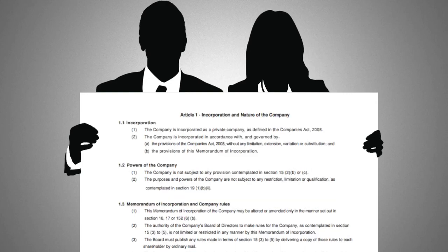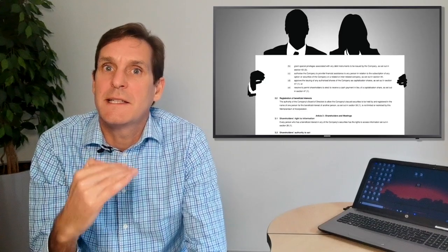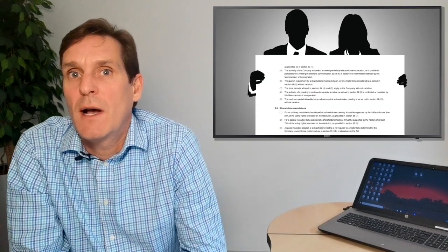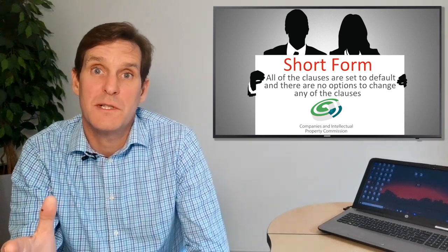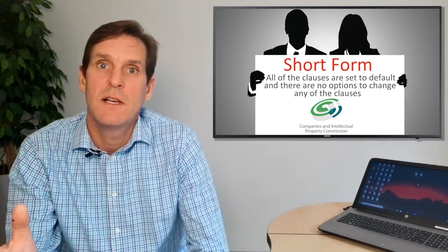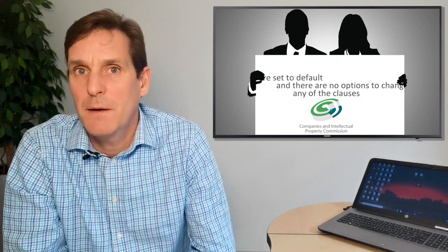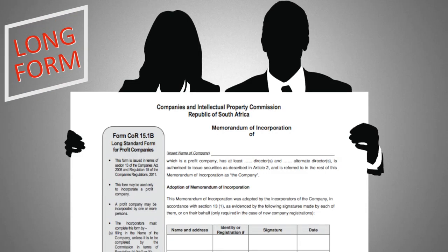The standard MOI is referred to as the short form, as it is the default MOI as drafted by CIPC. All the clauses are set to default and there are no options to change any of the clauses, so it is cost effective and very popular. You could choose to draw up your own MOI or change certain clauses of the 15.1b. If you choose this option, the MOI is now referred to as the long form, which is slightly more costly.